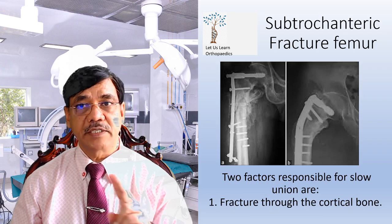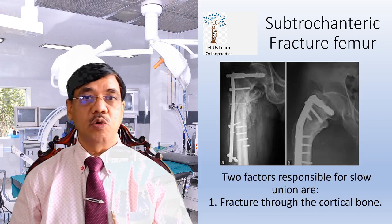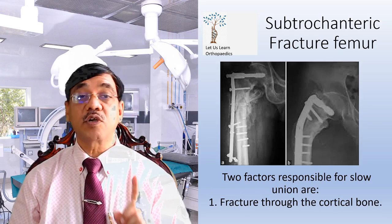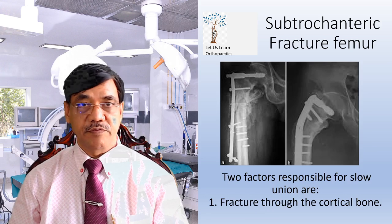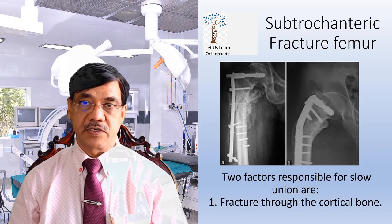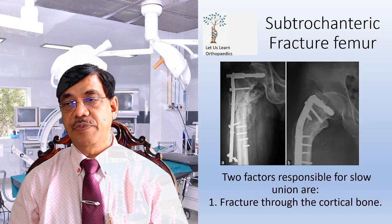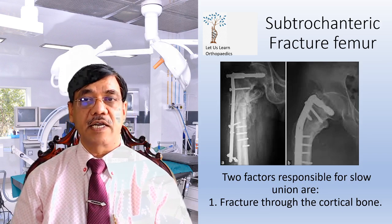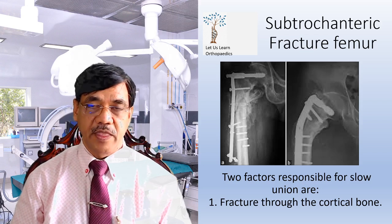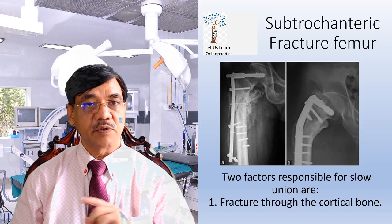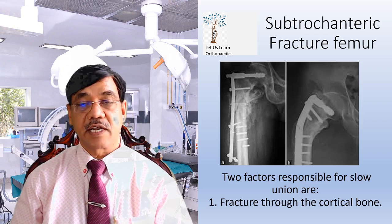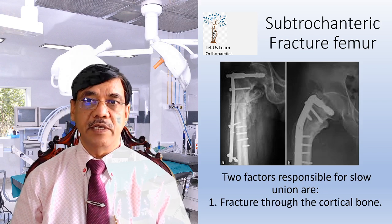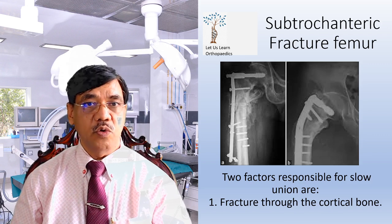The two factors responsible for slow union are: first, the fracture through cortical bone. If you look at our previous discussion about intertrochanteric fractures, IT fractures invariably unite because they occur at cancellous bone. But subtrochanteric fractures occur at cortical bone, and hence they invariably go for slow union.